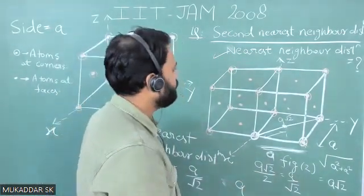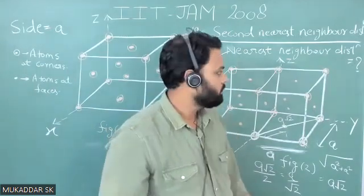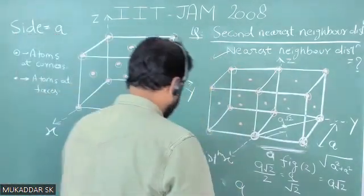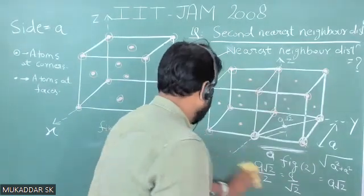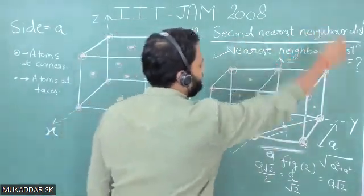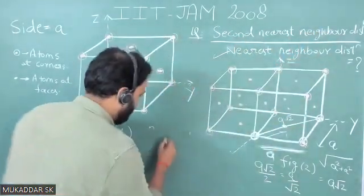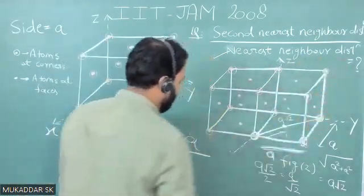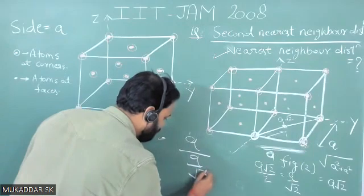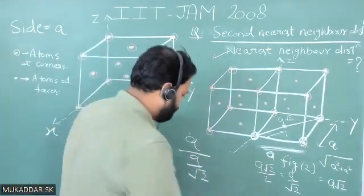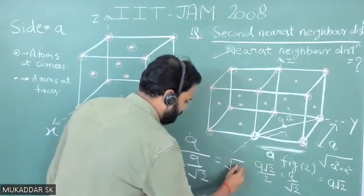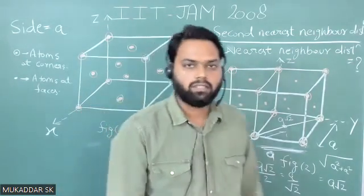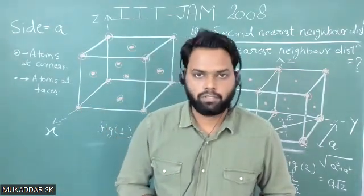Now we find the ratio. The second nearest neighbor distance is a and the nearest neighbor distance is a/√2. So the ratio is a divided by (a/√2), which equals √2. So √2 is our answer. Thank you so much.